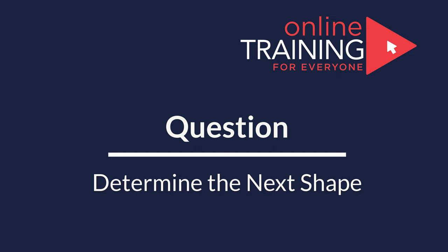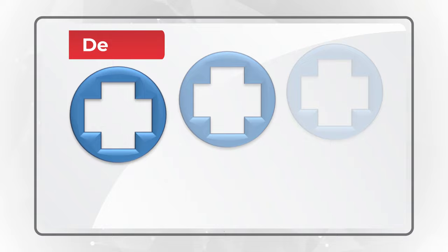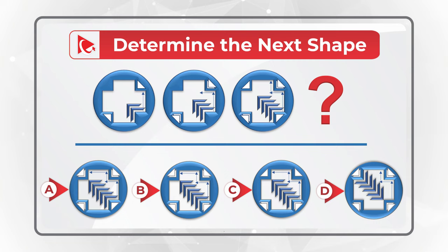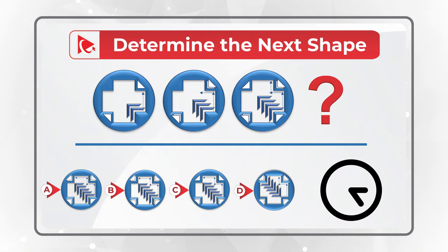Here is a practice question for you to test your skills. You are presented with a series of objects and you need to determine the next object in the sequence. Please choose one of the four choices: A, B, C, or D. Please make sure to post your version in comments so I can give you feedback. Thanks for participating and good luck.